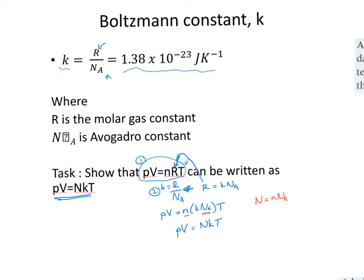The difference between PV = nRT and PV = NkT is that the first lets you calculate the number of moles using the molar gas constant, while the second lets you calculate the number of particles, whether atoms or molecules.